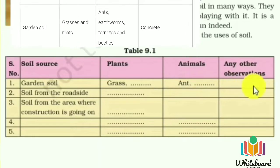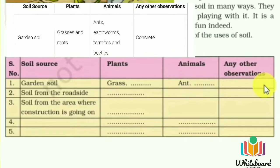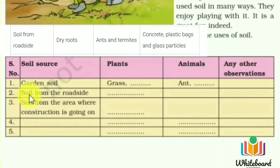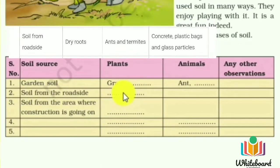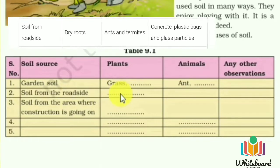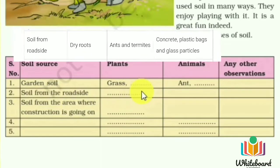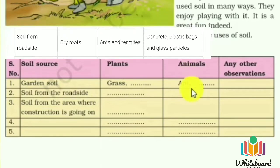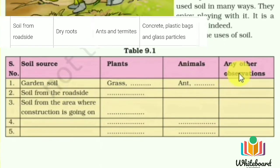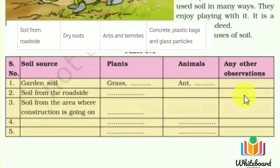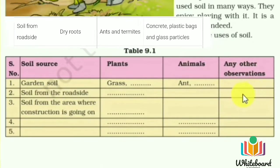Soil from the roadside: plant parts will be dry roots or dry fallen leaves. Animal parts will be ants and termites, which are very common roadside as well. Other observations: concrete, plastic carry bags, broken glass, and iron nails are also available here.